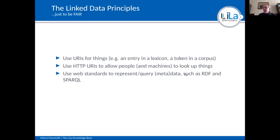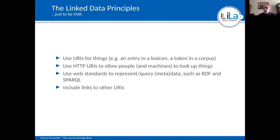One of the tenets of RDF is that everything is represented through triples. Triples are made of a subject, an object, and a predicate that connects them. For instance, I am a subject — Marco Passerotti — and this conference is the object. There is a predicate that connects Marco Passerotti and this conference: 'is a speaker of.' So: Marco Passerotti — is a speaker of — this conference. Everything deals with triples. And then, of course, include links to other URIs, connecting one URI to another through some property.